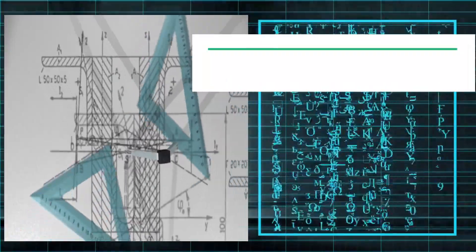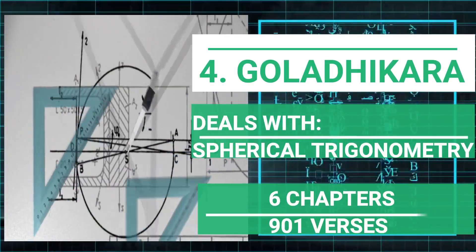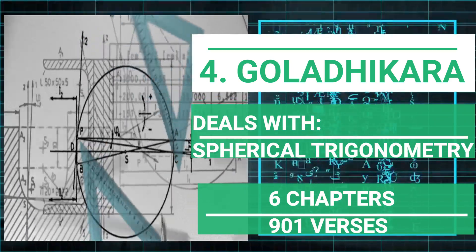Goladhikara which is meant for spherical trigonometry has 6 chapters and 901 verses or slokas.